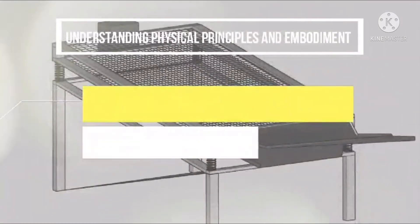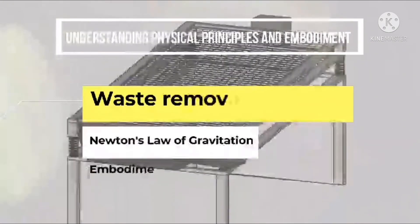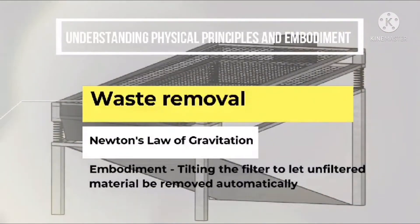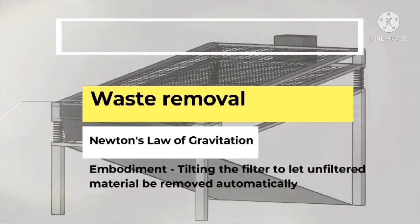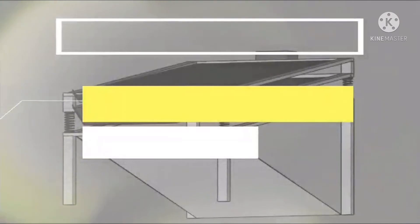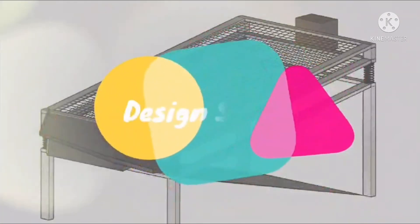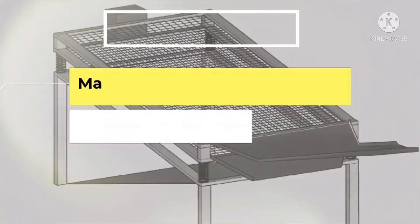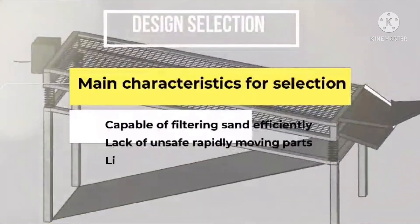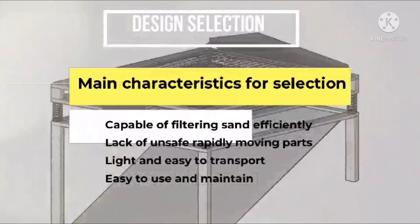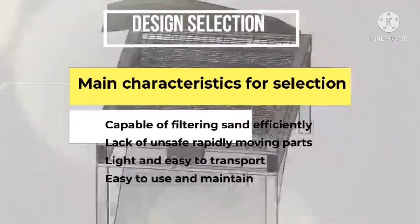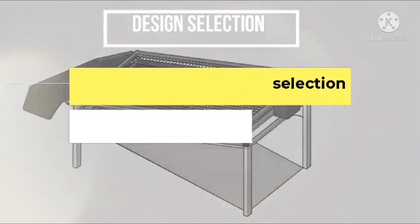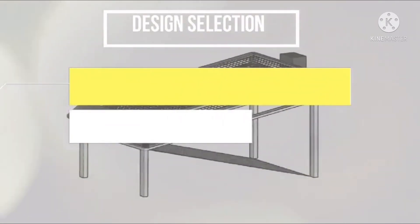In the waste removal process, Newton's law of gravitation is also considered. A tilt in the filter makes the unfiltered materials be automatically removed. This design was selected because it can filter sand efficiently, it doesn't have rapidly moving parts that can harm the user, it is light and can be transported easily, and it is easy to use and maintain.